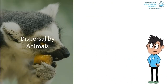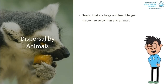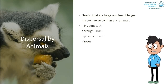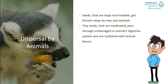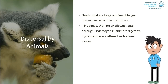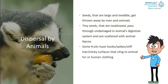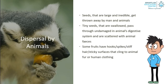Dispersal by animals. Seeds dispersed by this method are those that are large and inedible, which are thrown away by man and animals. Some tiny seeds that are swallowed pass through undamaged in the animal's digestive system and are scattered with animal feces. Some fruits have hooks, spikes, stiff hairs, or sticky surfaces that cling onto animals' fur or human clothing.